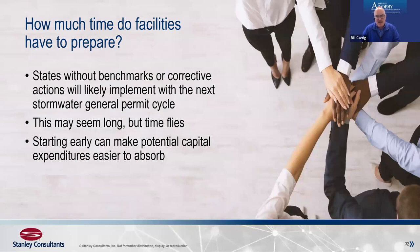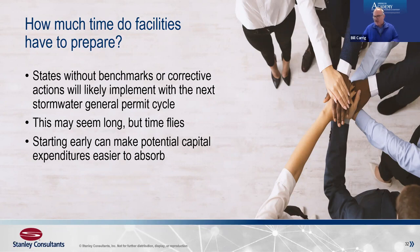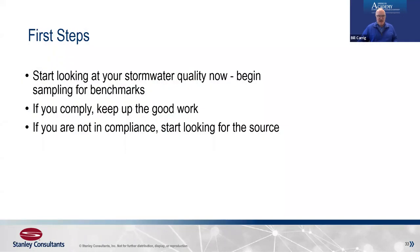Even if you're three, four, or five years away from these benchmark monitoring requirements becoming part of your permit, it may seem like a while, but time flies. Starting early could definitely make it easier to absorb some capital expenditures. There's that term — an ounce of prevention is better than a pound of cure. Go to the dentist every six months to avoid the big root canal in a few years — that's kind of what we're saying here. And now, Trent Humphrey is going to talk you through what are some of the things we can do to keep the numbers low to stay out of level three.